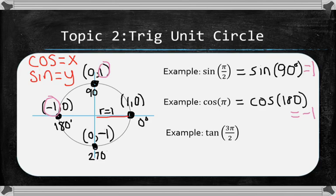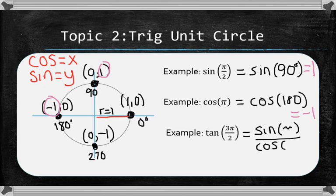Tangent is not as straightforward, but it's not hard. Tangent is, you might remember from pre-calculus, it's the same thing as sine of the angle over cosine of the angle. So if you know the sine and the cosine, you can find the tangent very easily.